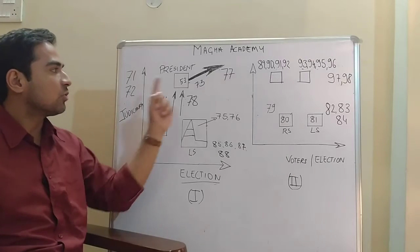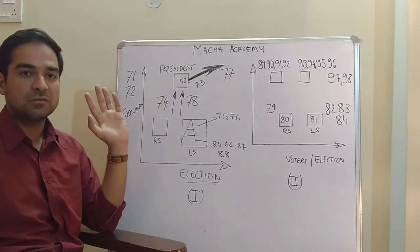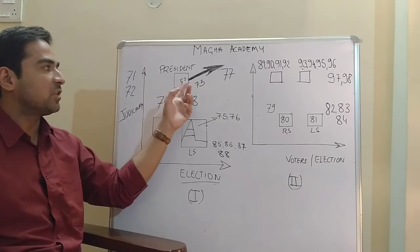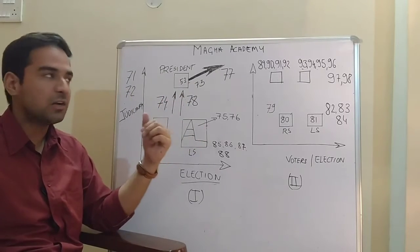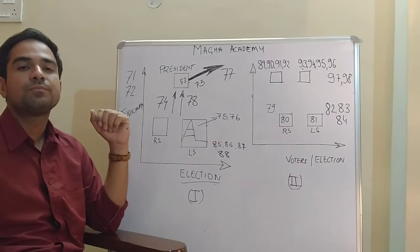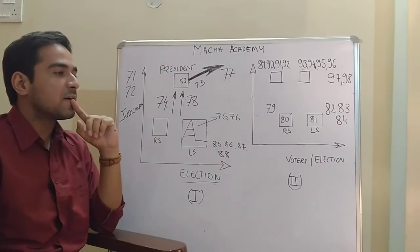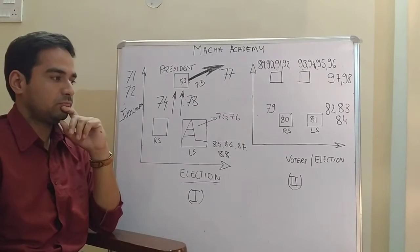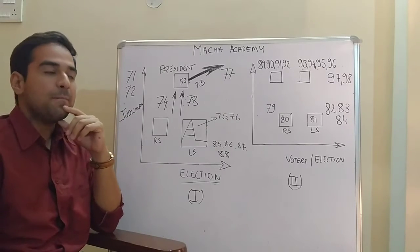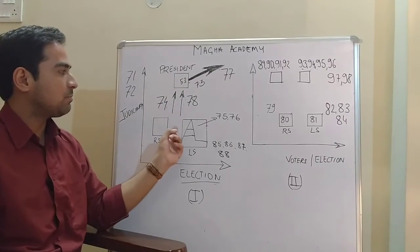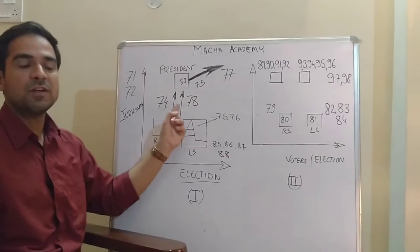So Articles 53, 73, and 77 - easy to remember, not very hard. Now Articles 74 and 78 have to be read together, both of them together, because this shows the President's relationship with the Parliament.